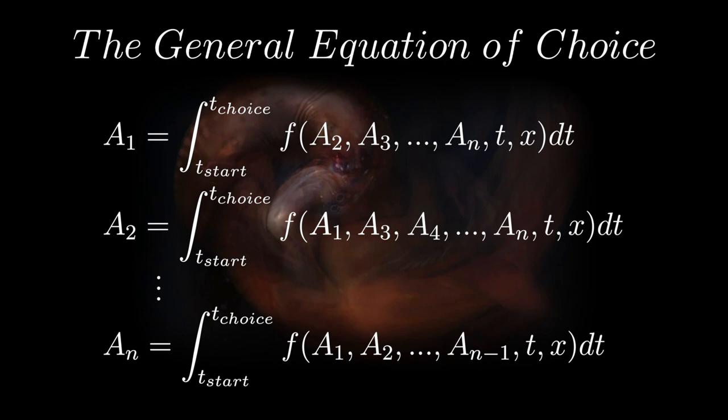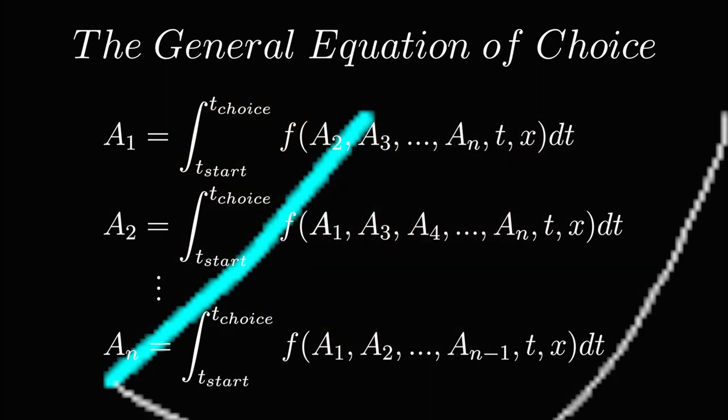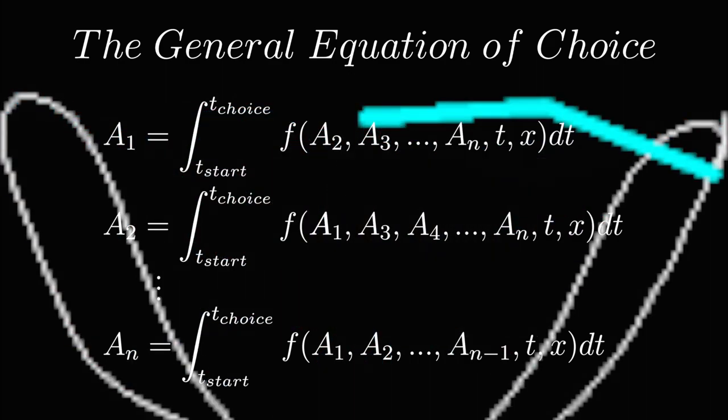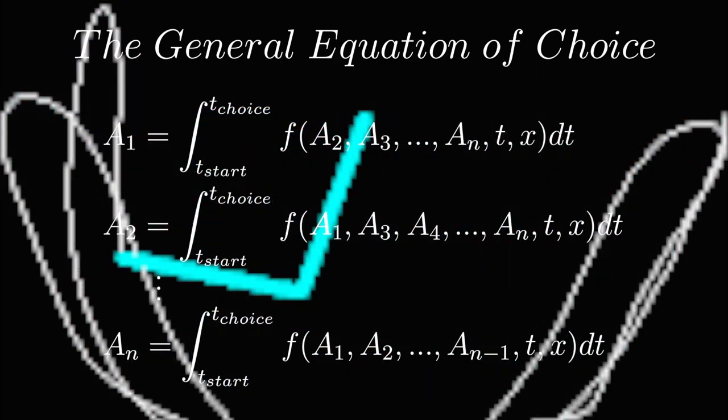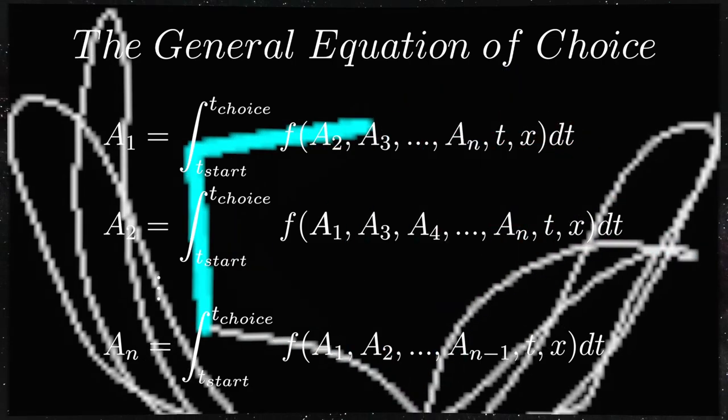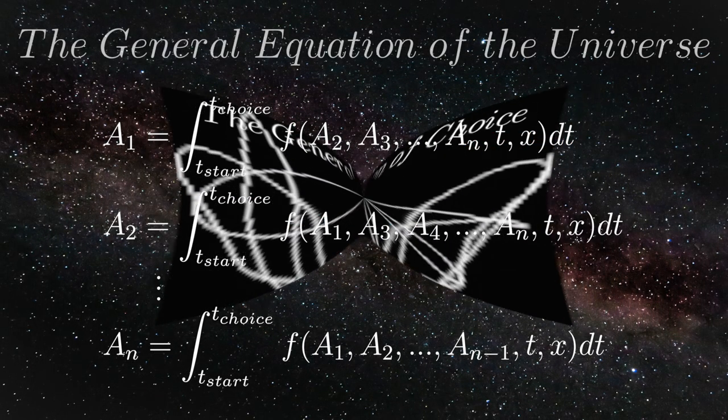Using this, we can predict the choices a human will make with perfect accuracy, given that we know the initial conditions and the forces involved. Just as with the double pendulum. And this equation can be applied to any being capable of choice. In fact, this equation can be applied to the entire universe.